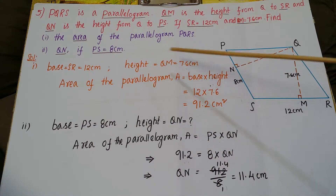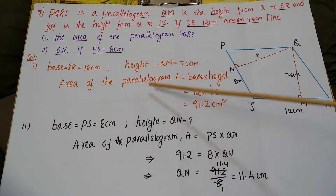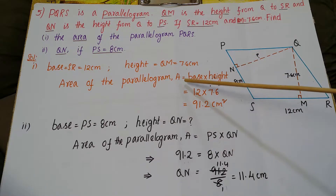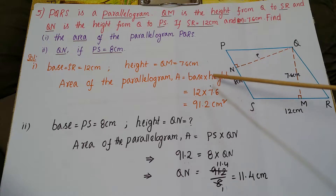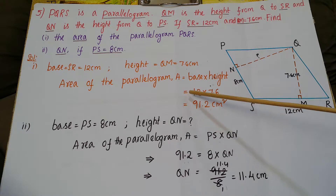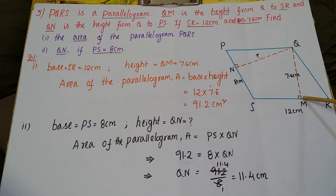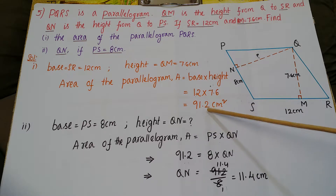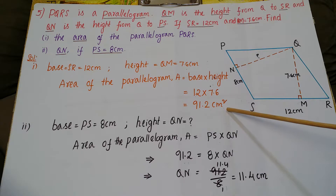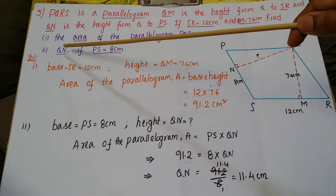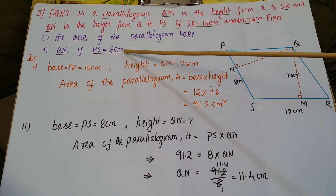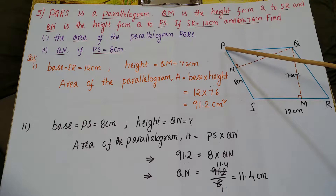Base is equal to 12 centimeters, height is equal to 7.6 centimeters. Area of parallelogram equals base into height, so 12 into 7.6, which gives 91.2 centimeters square.